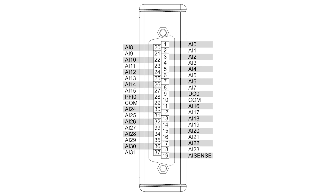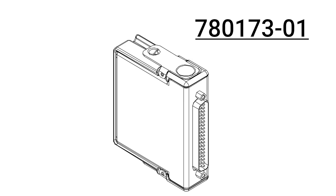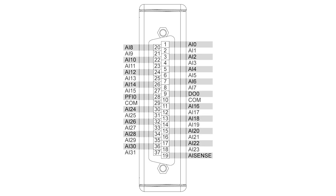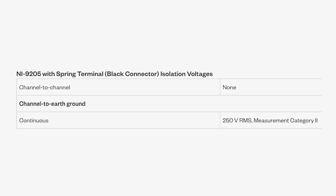Finally, part number 780173-01 has D-sub front connectors, but is the only version that is conformal coded. The variations with D-sub connectors have 60V DC channel-to-earth ground isolation, while the module with spring terminal connectors has 250V RMS channel-to-earth ground isolation.